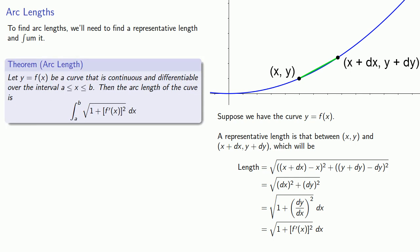Let y equals f(x) be a curve that is continuous and differentiable over the interval between a and b. Then the arc length of the curve is going to be the integral from a to b of square root 1 plus f prime of x squared.